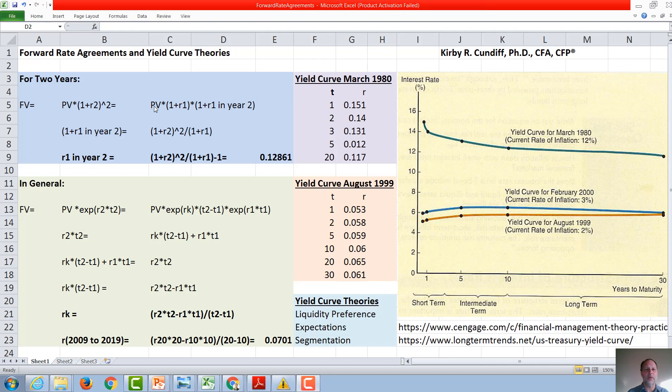we could rearrange this equation, knock the PV off both sides, and solve for this term by taking (1+R2)² divided by (1+R1), then subtract one from each side, and we get R1, the one-year interest rate in year two, or one year from now, is going to be (1+R2)² divided by (1+R1) minus one.